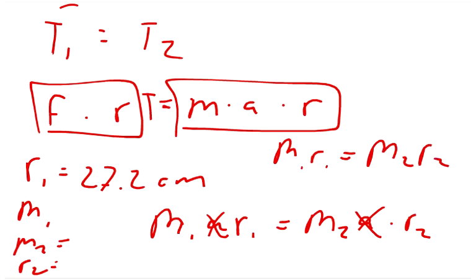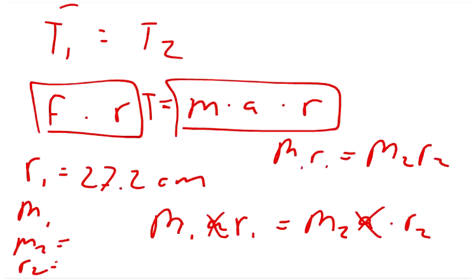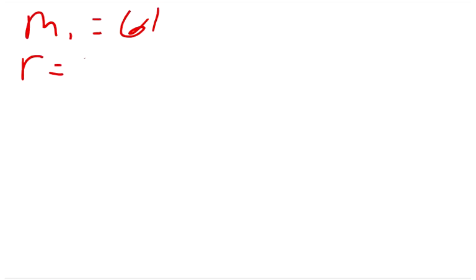So we get an equation where M1R1 equals M2R2. And as long as all of our units are the same, we don't have to convert out of centimeters. We don't have to convert out of grams. We can just stay and keep everything uniform. Let's write down what everything is. M1 was 61 grams, the mass that's hung at the 12 centimeter mark. And its radius, we said, was 27.2 centimeters. And so then we have an M2, which we don't know. We're trying to find what the mass of this meter stick is. We have an R2.